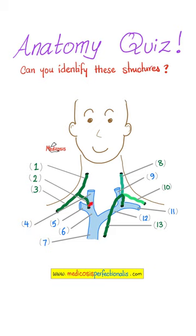These two veins join together to give the right brachiocephalic vein, and the right brachiocephalic with the left brachiocephalic veins will give the superior vena cava.